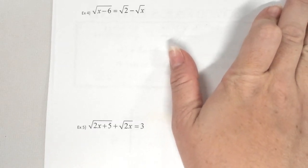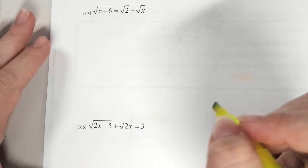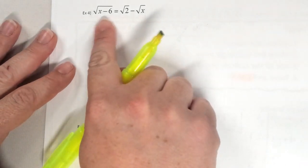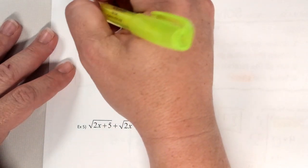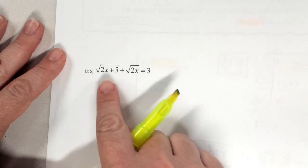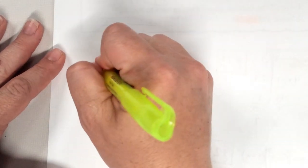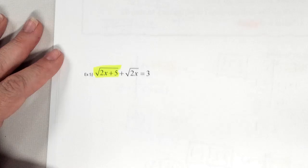You'll notice that both of these have more than one radical — one has two, one has three. The one you want to get by itself is the one with the most terms, the most oomph. So for example 4, one radical has two terms and the others have one. We want to get the one with two terms by itself. For example 5, you want to get the 2x plus 5 by itself because it has the most terms.